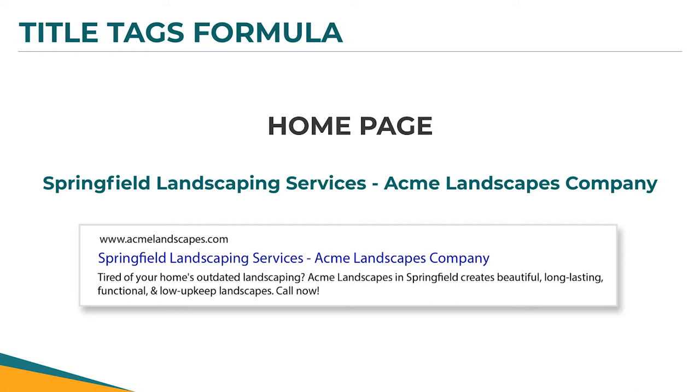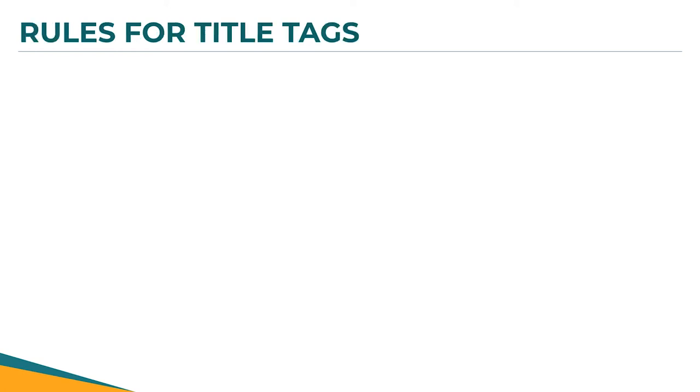For Springfield Landscaping Services, their main keyword is 'Springfield landscaping,' their business name is towards the end, and supporting keywords were 'landscaping services' and 'landscaping companies.' We ended up going with 'Springfield Landscaping Services | Acme Landscapes Company.' Try to write it in a way that makes grammatical sense while mixing in and matching where those keywords appear.